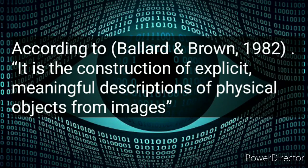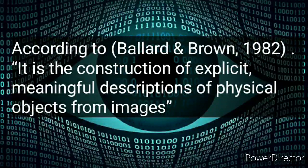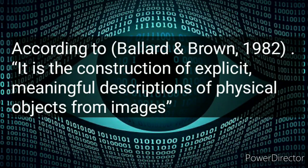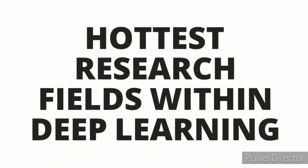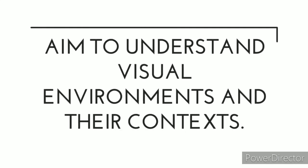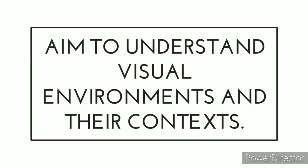According to Ballard and Brown (1982), computer vision is the construction of explicit, meaningful descriptions of physical objects from images. It is one of the hottest research fields within deep learning at the moment, and its aim is to understand visual environments and their contexts.